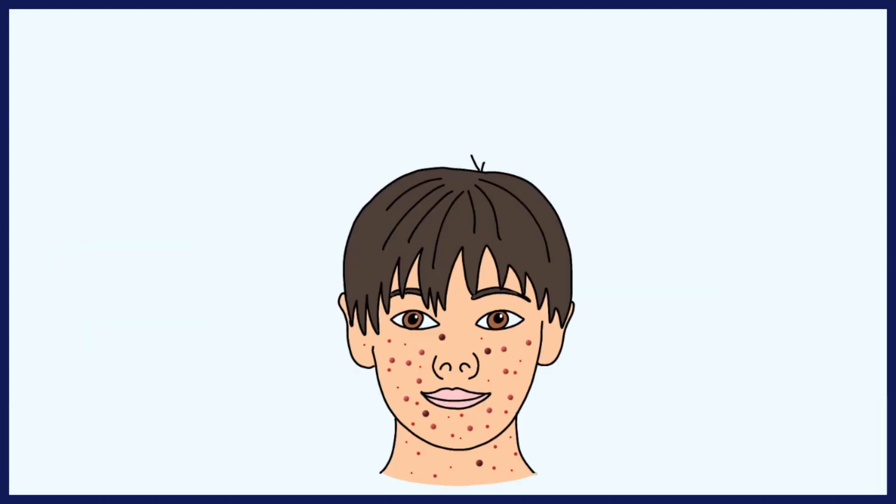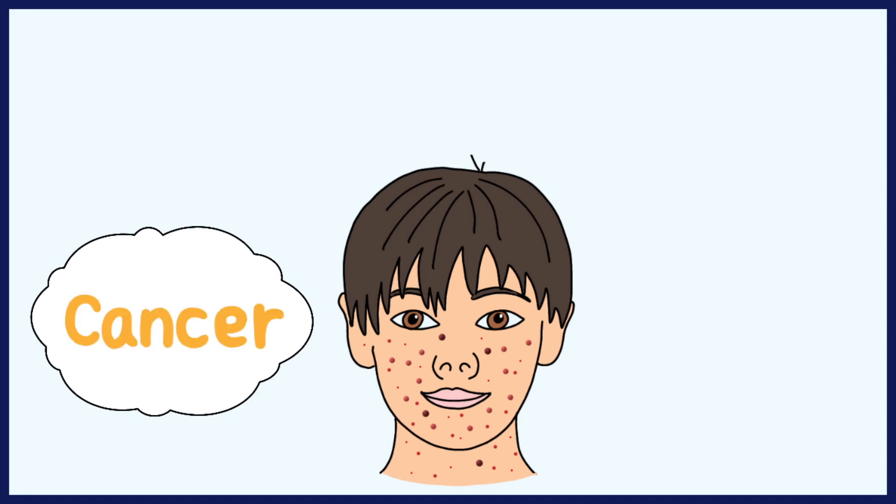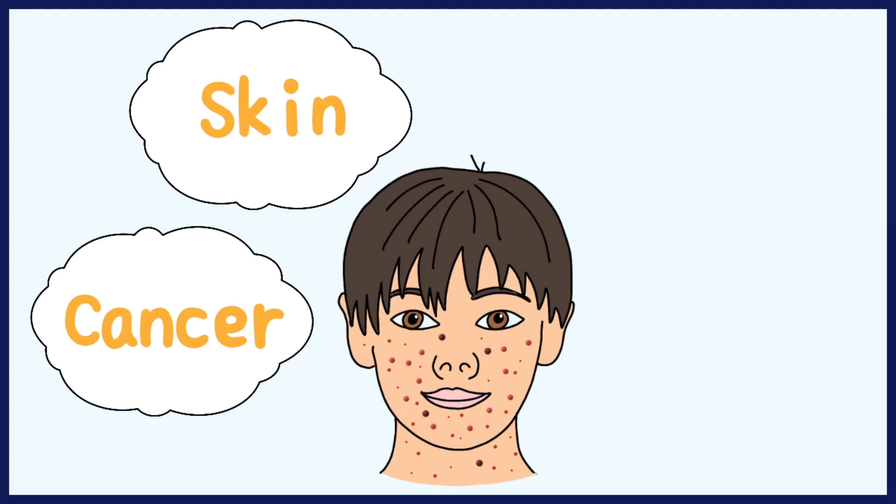Kaposi's sarcoma is a form of cancer in which tumors with tiny blood vessels grow below the surface of your skin or mucosa. It commonly affects skin but can spread to other organs too. The most visible signs are lesions on the skin — flat, painless spots that are red or purple on light skin and bluish, brownish, or black on dark skin.